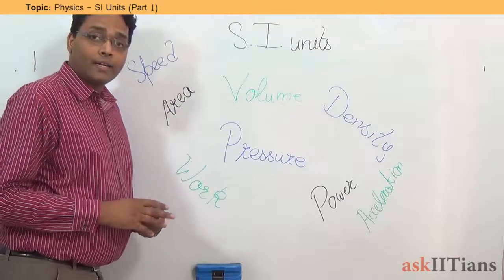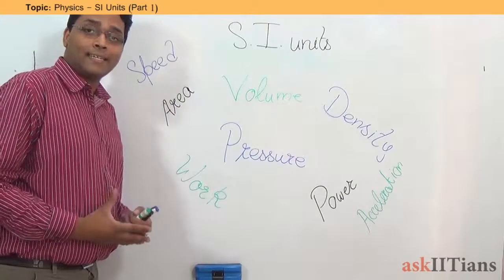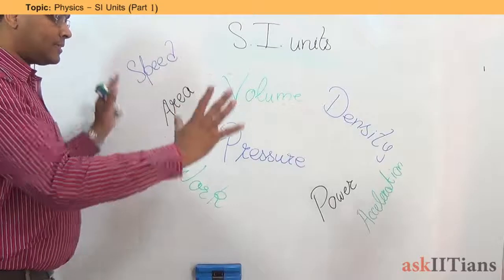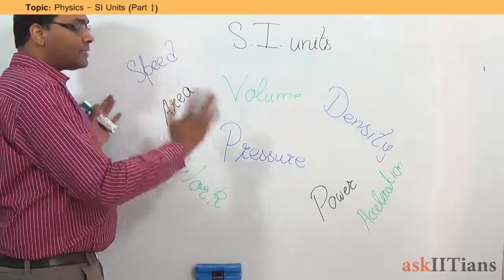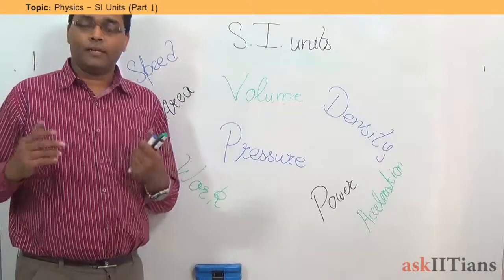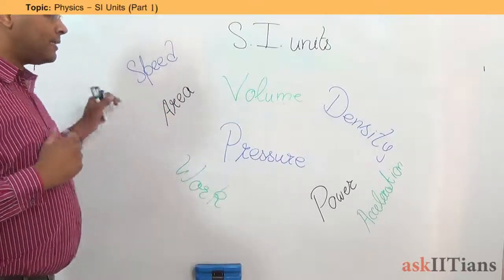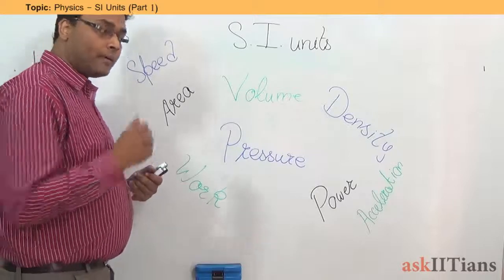And we will be now classifying what exactly are the SI system of units. These are some of the units that are just put together. As you can see, these are all dependent on some other quantities. So, we will be trying to understand what exactly do they depend upon, what are their derived units and so on.